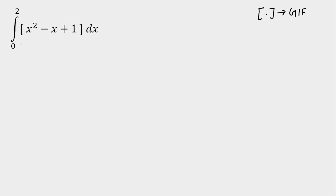Today we are going to solve a question on definite integration. The question is: integration from 0 to 2 of GIF of x squared minus x plus 1, dx. This is not as easy as it looks because GIF is there. Whenever GIF is present, we need to break the interval where the inside material is an integer.